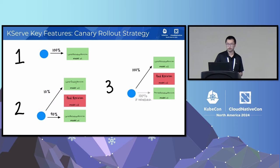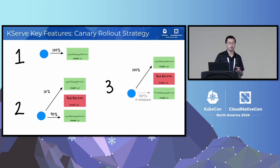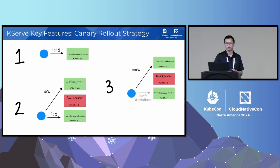Another feature is canary rollout. When you have an improved model and want to roll out a new version to production, you don't want to do everything at once and impact what's currently running. You can gradually roll out new model versions based on traffic, and roll back if anything goes wrong — for example, if the model quality doesn't meet your expectations, you can easily revert to the previous version.